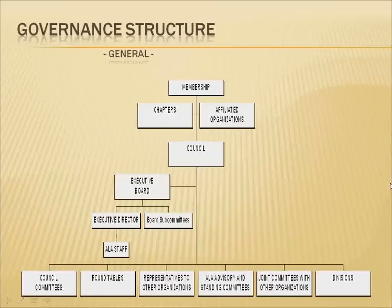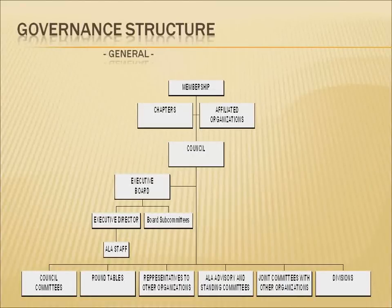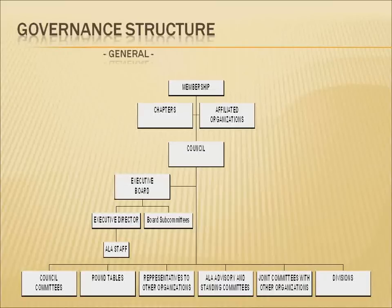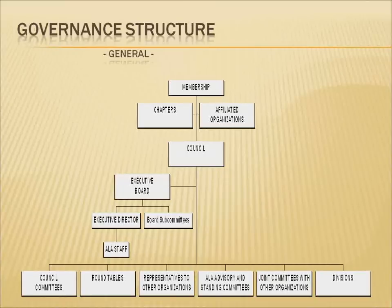The governance structure is also critical. This is a complex organization. It has a council — a group of individuals who are elected from the membership and sit in a policy role in relationship to the membership. An executive board is elected out of that council and has certain delegated responsibilities in terms of the finances of the organization and in terms of working with the executive director and his staff. There are a number of important committees established across the organization. We also have a complex of divisions and roundtables — groups that have been organized to reflect the special interests and needs of the memberships.